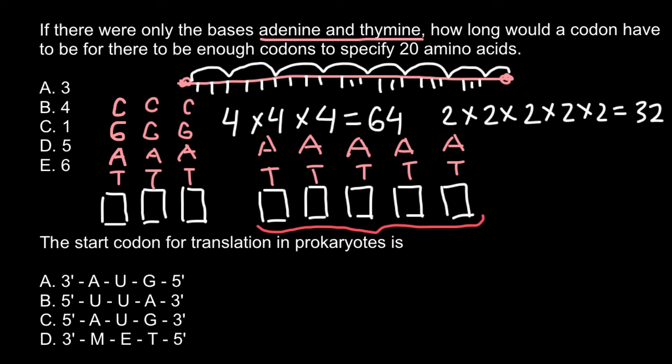As you see, the correct answer is answer D. Next question: the start codon for translation in prokaryotes is... and you have to choose between these 4 answers.